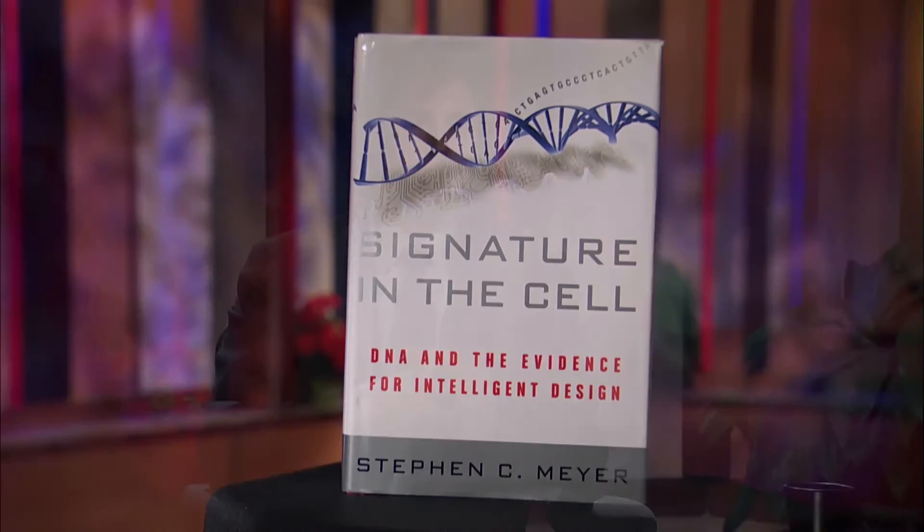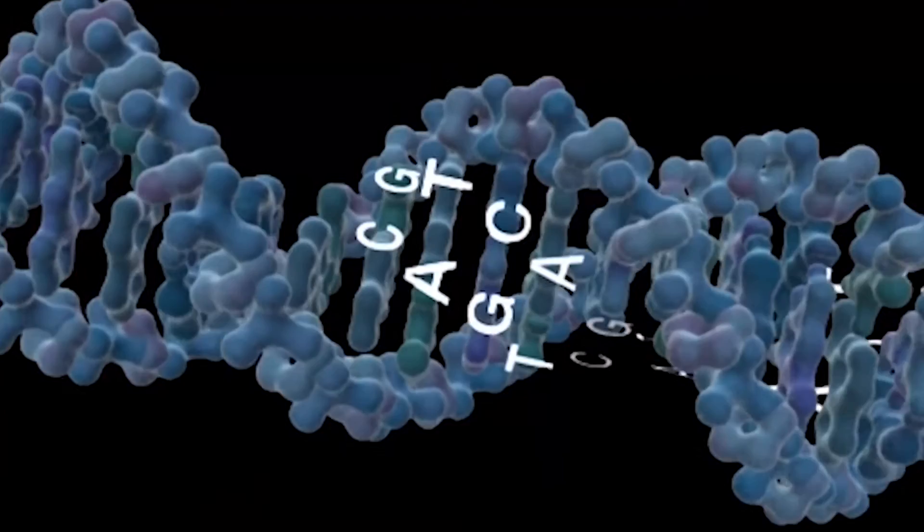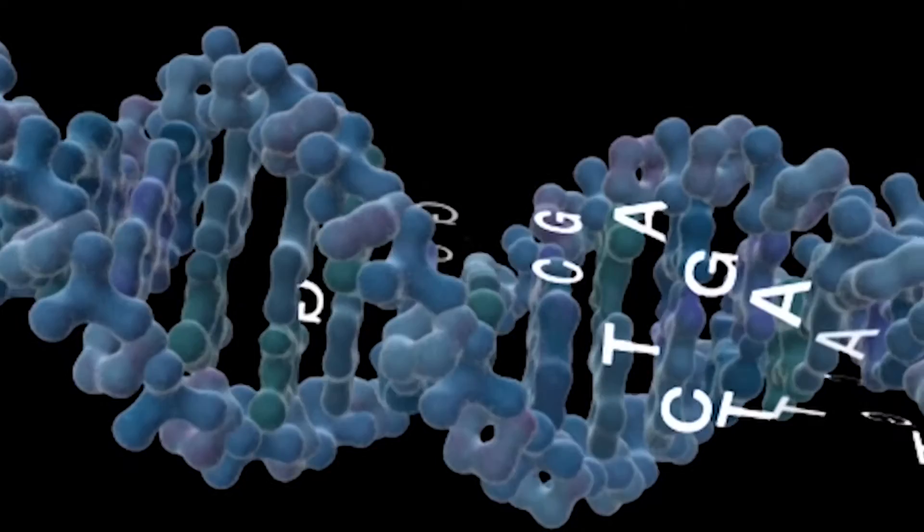I realized that his statement was absolutely right, and it actually formed the basis of a scientific case for intelligent design using the method of Darwin and Lyell. In my first book, Signature in the Cell, I developed an argument for intelligent design using that method to show that the origin of the information needed to build the first living cell was best explained by an intelligent agent, by the activity of a designing intelligence in the history of life.